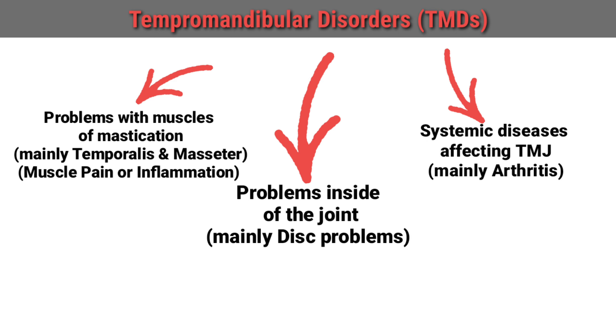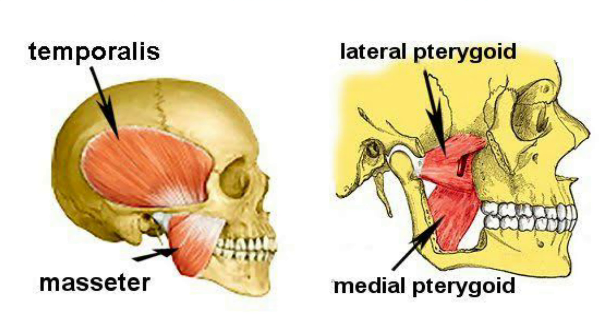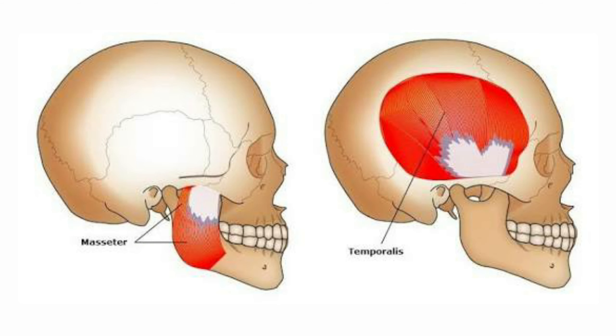Like all problems which could happen in the muscles of the body, the muscles of mastication — primarily responsible for movement of the lower jaw and the TMJ — could have a problem. The two most important muscles are the masseter and the temporalis. Some people experience pain while opening their mouth pointing to the area above the ear where the temporalis is situated, or to the side of the jaw where the masseter is situated, and some patients are not even able to open their mouth properly.